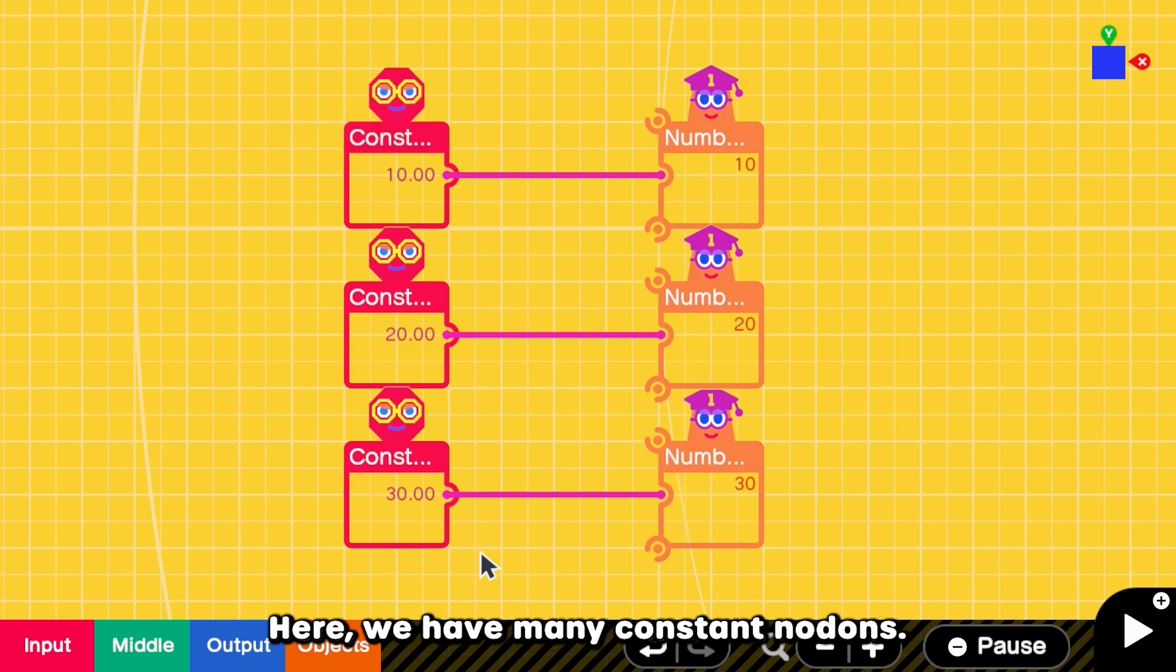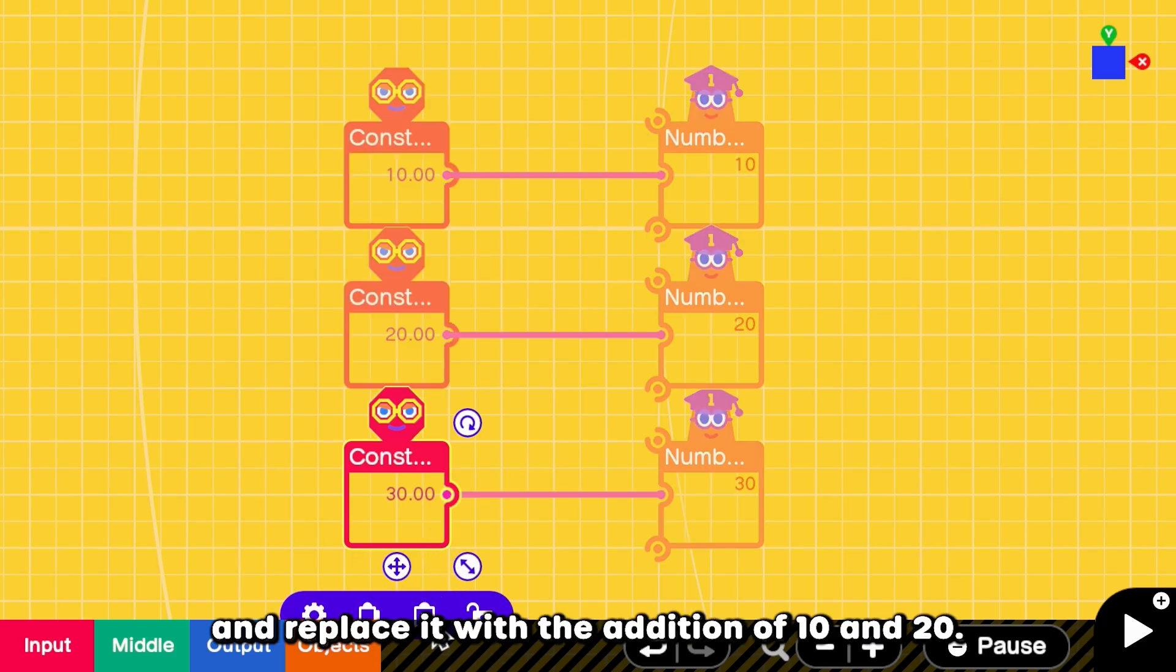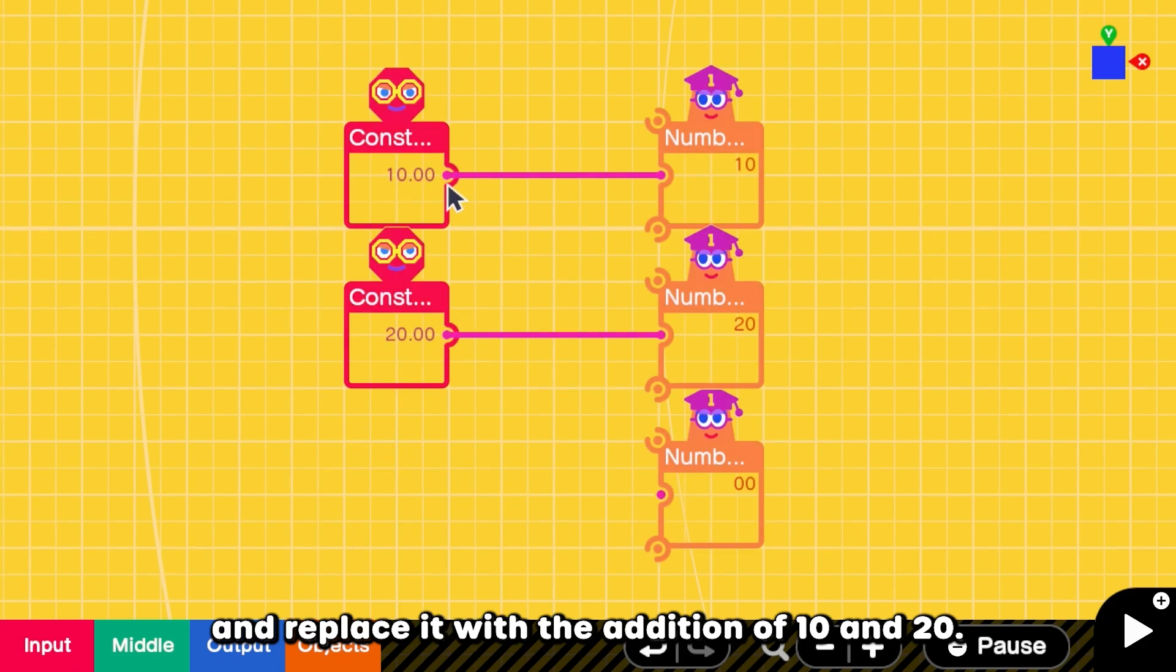Here we have many constant nodons. Can we remove one of them? Here you can see that 30 is equal to 10 plus 20. Therefore, we can remove 30 and replace it with the addition of 10 and 20.